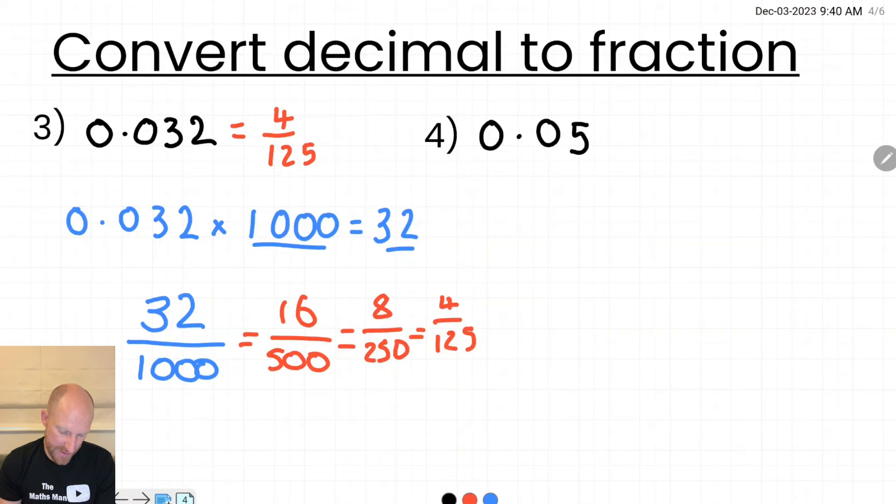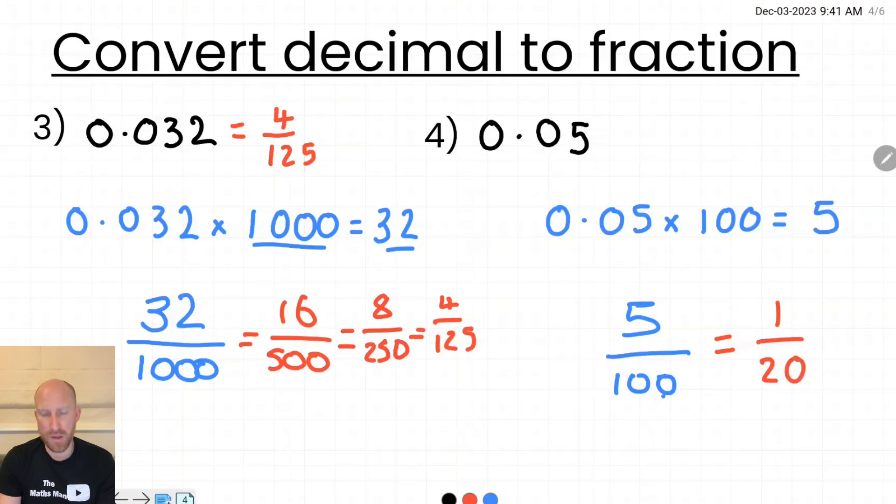Okay let's take a look at the last example, 0.05. So that's two decimal places. I'm going to multiply it by 100 to give myself the whole number 5. 5 is then going to become my numerator. My denominator is going to be 100 because that's what I multiplied it by. And with some simplifying that equals the same as one twentieth.